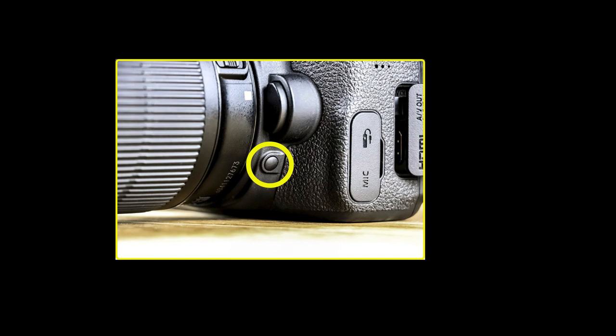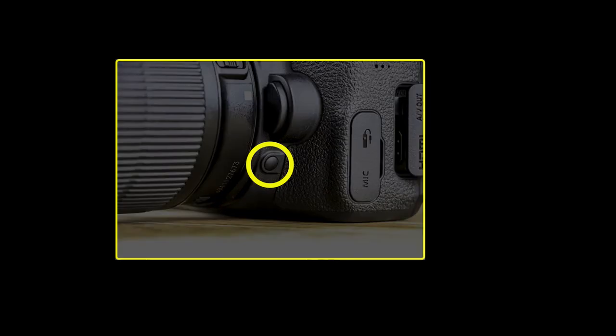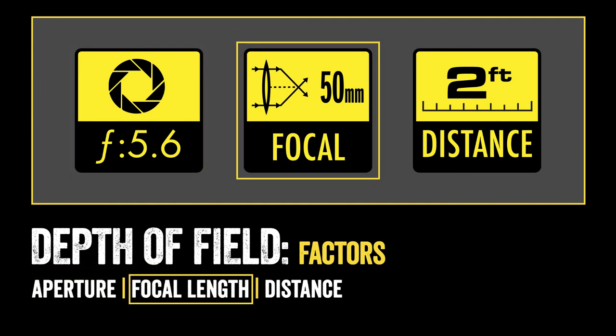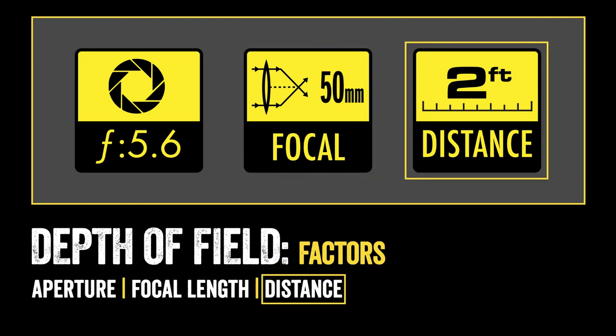Let's do a quick review of our three factors and how they impact depth of field. Our aperture — as we increase our aperture, we decrease our depth of field. Our focal length — as we increase our focal length, we decrease our depth of field. And our distance to subject — when we decrease our distance between the camera and the subject we focus on, we decrease our depth of field. Hopefully, you now have a basic understanding of how depth of field works and how photojournalists use it in the field to control what our viewers look at. By using depth of field to make certain areas out of focus in an image, we can concentrate the viewer's attention to a specific focus point in our images.